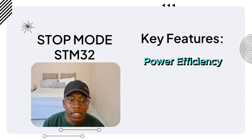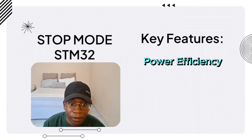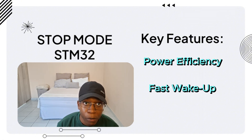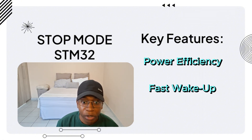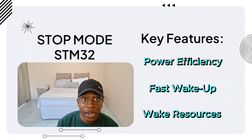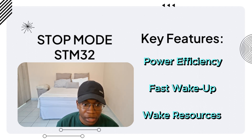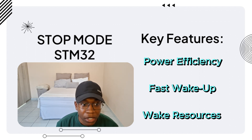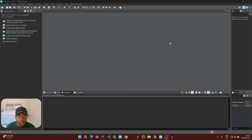The key features of stop mode include power efficiency, where the microcontroller retains critical data in SRAM while shutting down unnecessary components; fast wake-up, where the microcontroller can return to active mode quickly upon detecting a wake-up signal; as well as wake-up resources such as an external interrupt like a button, an RTC, or other configured peripherals.